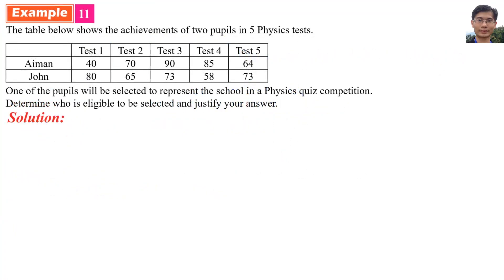Example 11. The table below shows the achievement of two pupils in five physics tests. One of the pupils will be selected to represent the school in a physics quiz competition. Determine who is eligible to be selected and justify your answer. Solution: